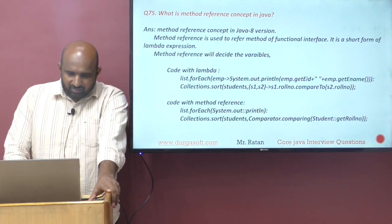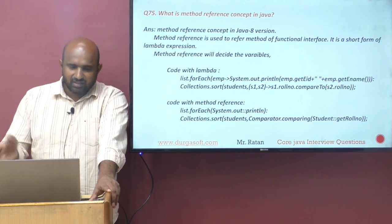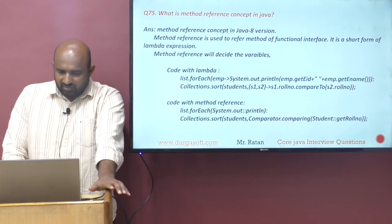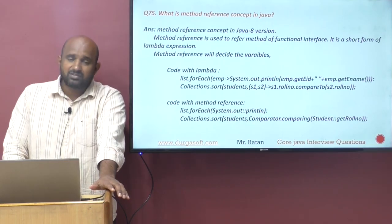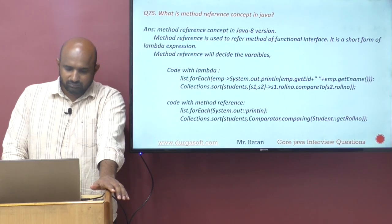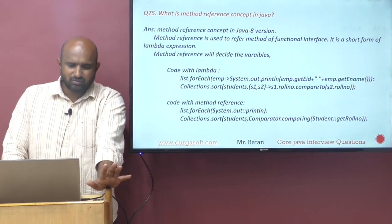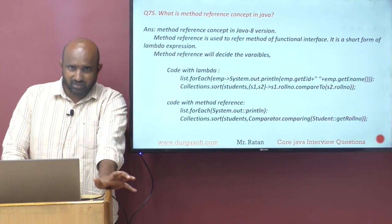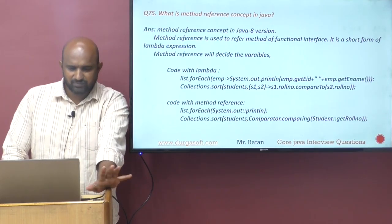Code with lambda uses the arrow and variable names. Code with method reference uses the double colon (::) syntax, and the method decides variable names internally — you don't need to worry about variable declarations. For example, Comparator.comparing(Student::getRollNumber) means comparison is done based on roll number.